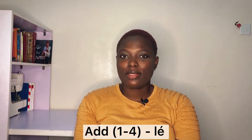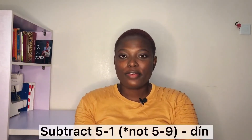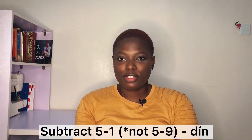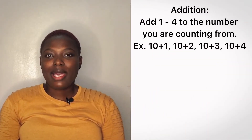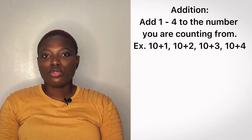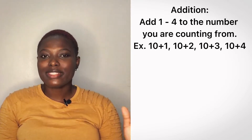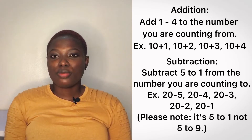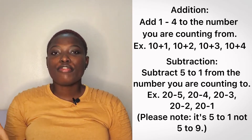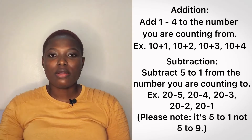You add for 1 to 4, so you will hear something like those forms. For 5 to 9, you use subtraction. For addition, you add 1 to 4 to the number you're counting from. For subtraction, you subtract 5 to 9 from the number you're counting to.